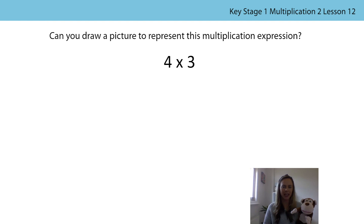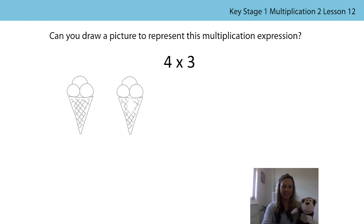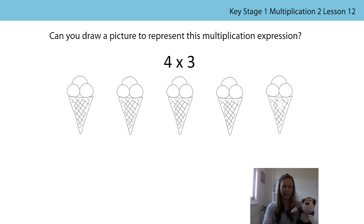Can you draw a picture to represent the multiplication expression four times three? Pause the video whilst you draw your picture and remember to explain to somebody at home how you know your picture represents the multiplication expression. Have a look at what Bongo and I have done. We drew five groups of three — but wait, something's wrong. The four in our multiplication expression represents the number of groups, so we only need to have four groups. That was our mistake, Bongo.